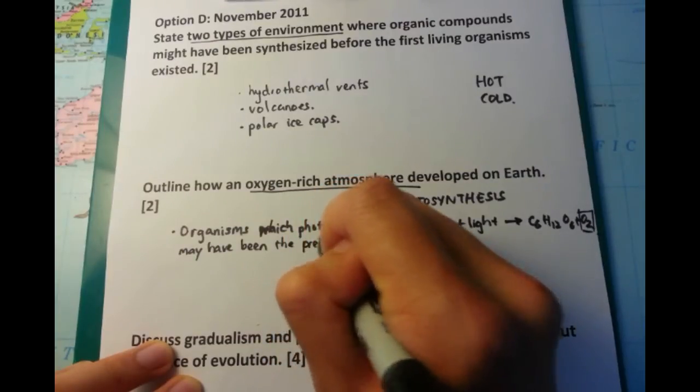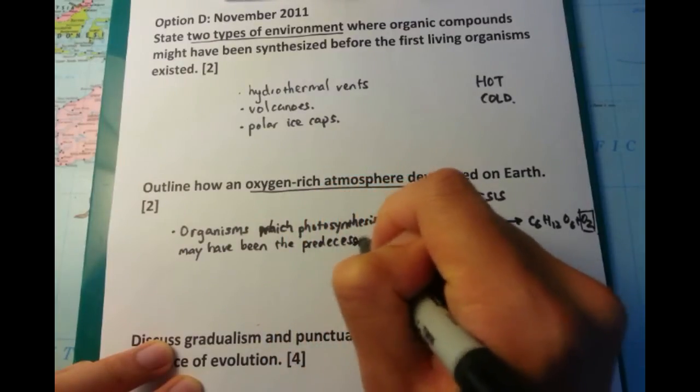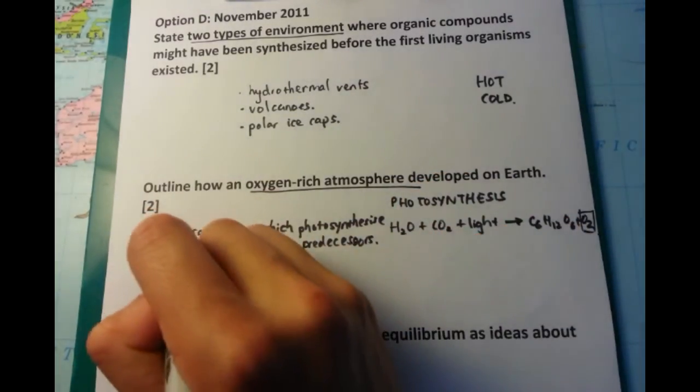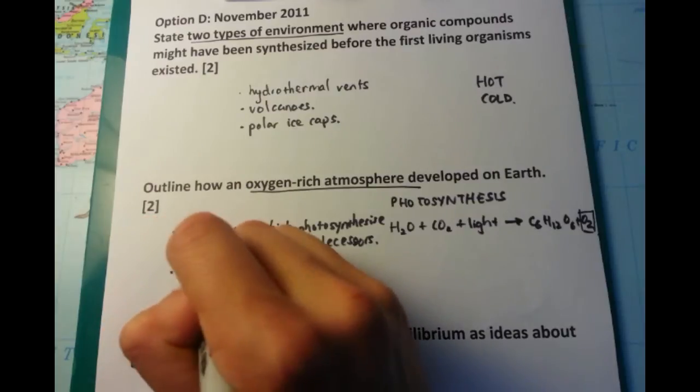So as a result of the continual production of oxygen, we have an accumulation of this particular gas within the atmosphere. And that's the next point that you need to talk about. So let's break it down. First point,